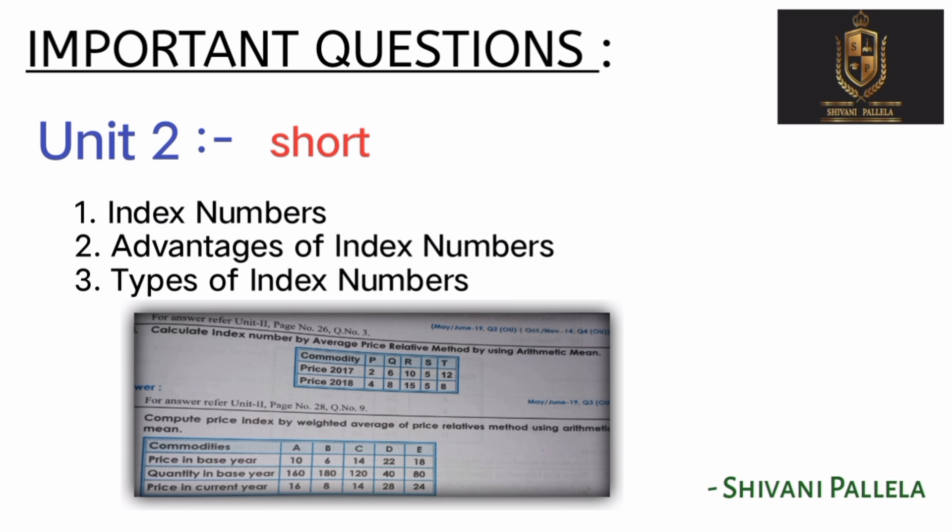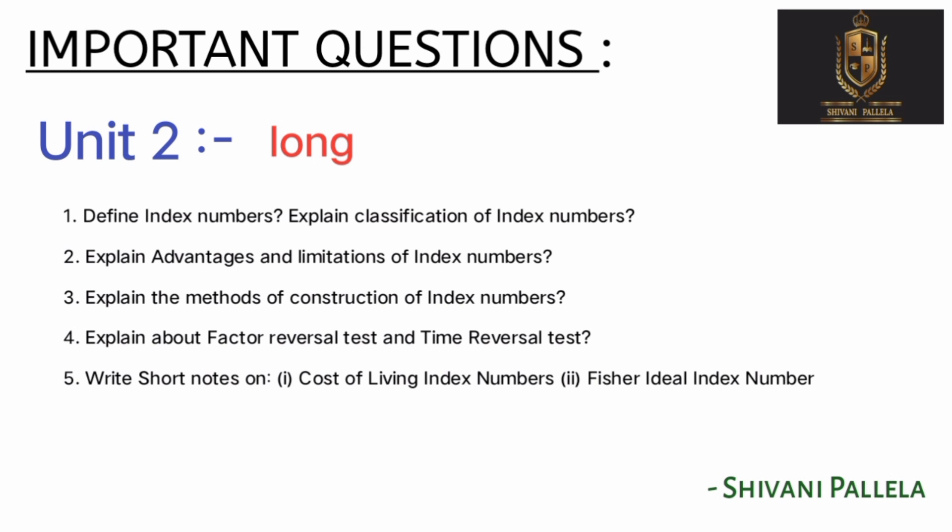For Unit 2 — Index Numbers — short questions cover theory: advantages of index numbers and types of index numbers. These three theory questions are important. Unit 2 long has five theory questions: advantages and limitations of index numbers, and methods of constructing index numbers are very important.